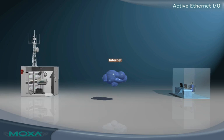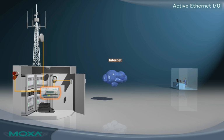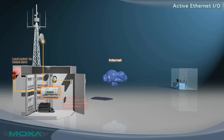Active Ethernet I.O. enables an immediate response to I.O. events. The I.O. server can send real-time reports to network hosts and simple commands to attached devices. Local alarm control can be achieved without an additional controller or PC.